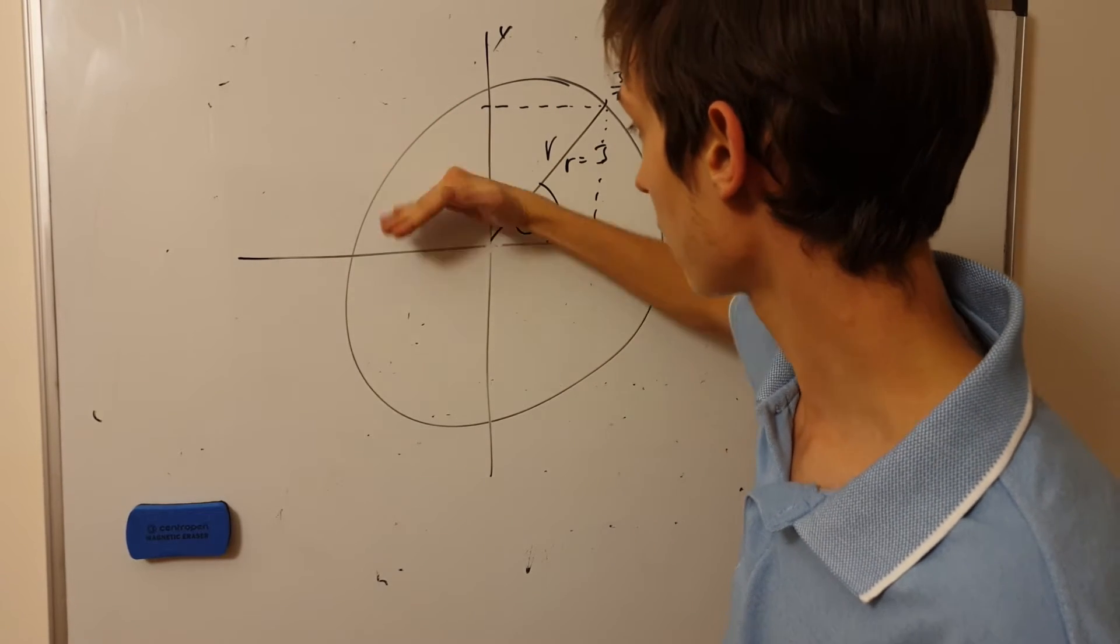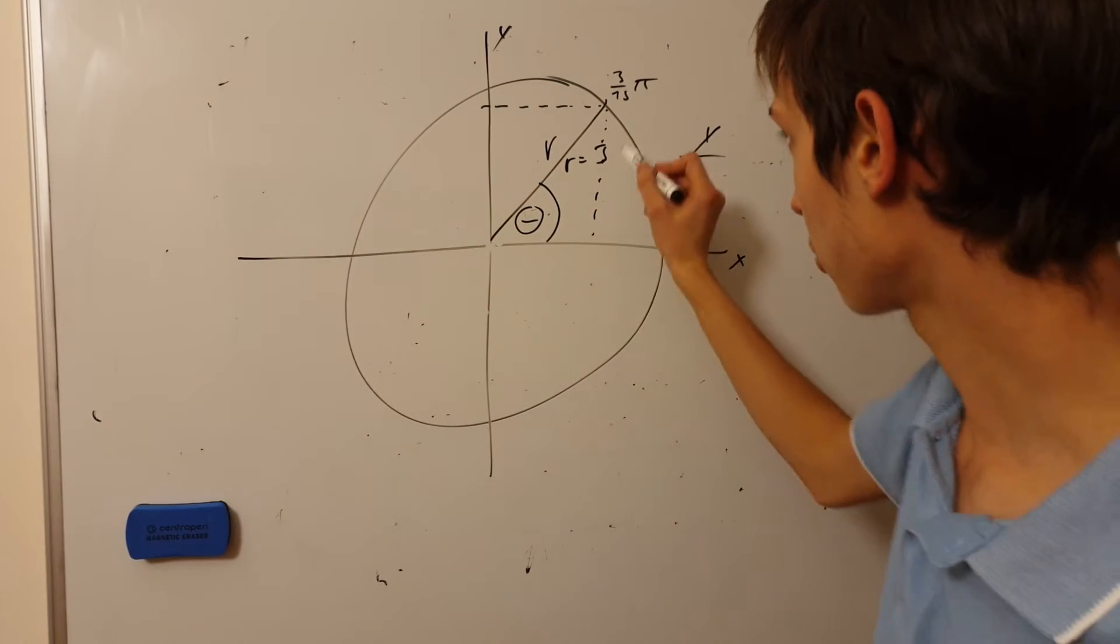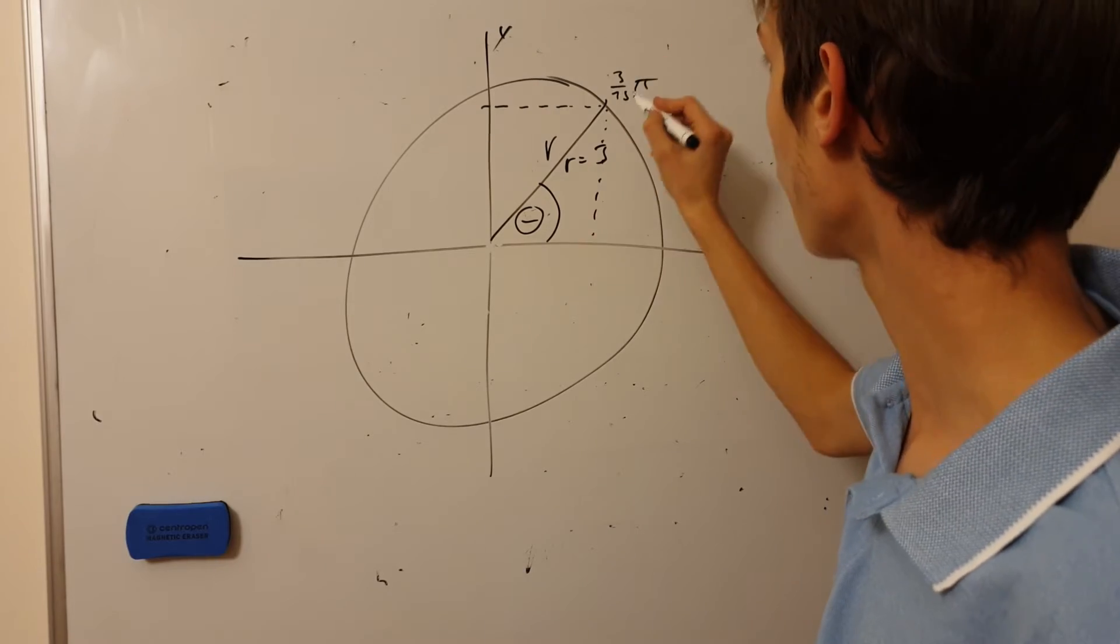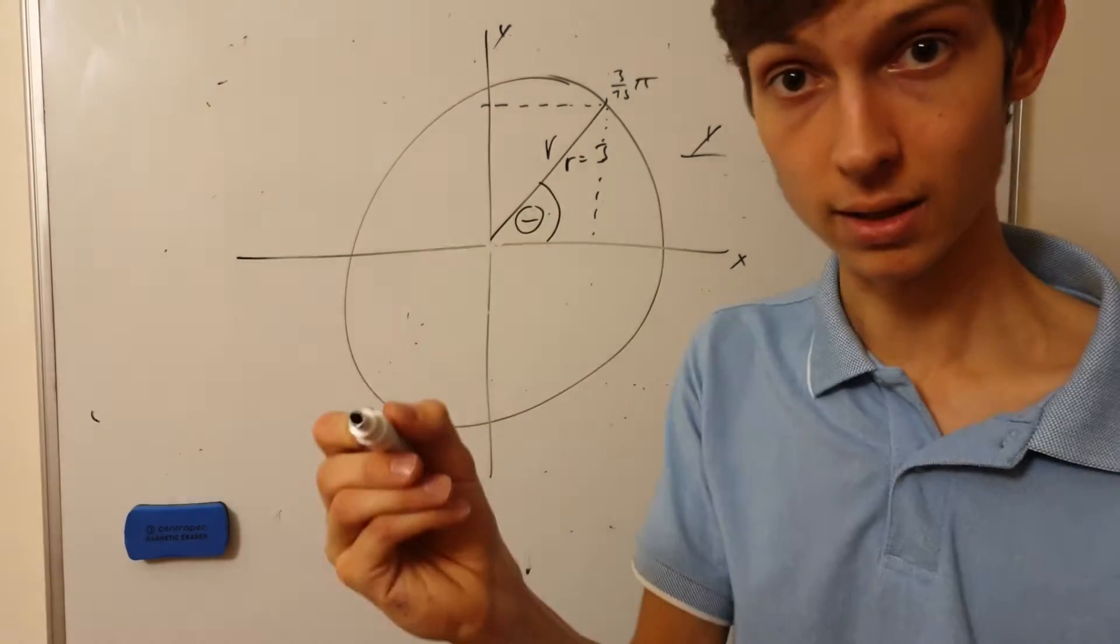It can be all over here, it can be all around. So in this case, we have approximately, I don't know, 50 degrees or something, it's 3 over 13 times pi, radians.